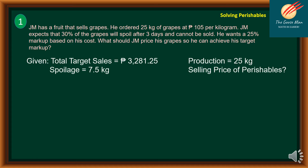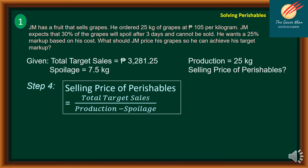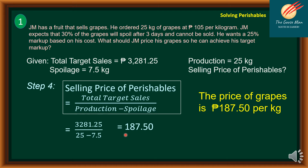Step 4: Find the selling price of the perishable. Total target sales = 3,281.25; production = 25 kg; spoilage = 7.5 kg. Applying the formula — selling price equals total target sales divided by (production minus spoilage) — we get 3,281.25 divided by (25 minus 7.5), which equals 187.50 pesos per kilogram. So from a cost of 105 and an initial price of 131.25, you must sell at 187.50 per kilogram to cover the 7.5 kg spoilage.